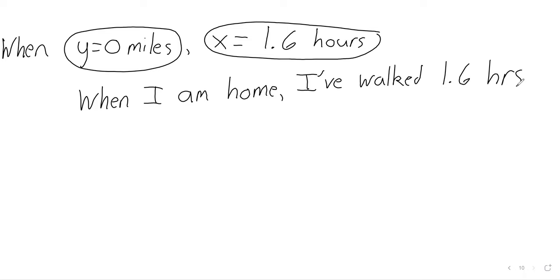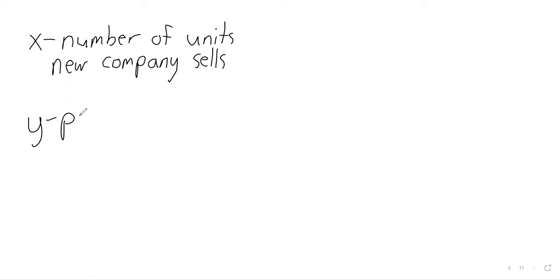So again, this intercept has a very concrete, a very real-world meaning. But unlike the y-intercept, which is basically always some kind of initial value, the x-intercept varies a lot in terms of how it should be interpreted. So let me not put an equation on the board, but let me put a graph. x: the number of units a new company sells. And y can be the profit of the company.